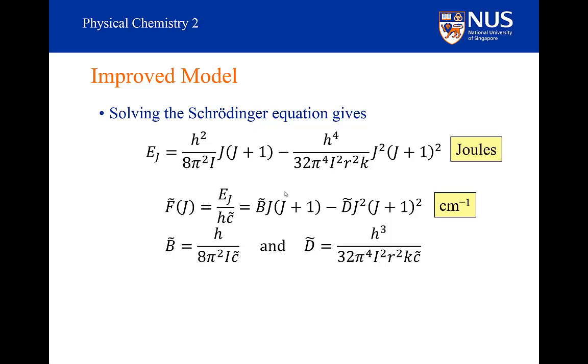But now we have this rather nasty set of parameters, multiplied by J squared into J plus 1 all squared. In the rotational term, this is given the symbol D into J squared into (J+1) all squared. This is my centrifugal distortion constant D.